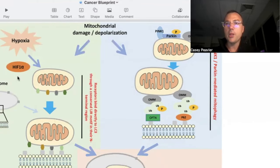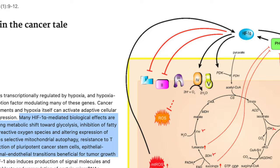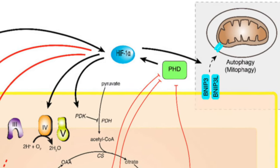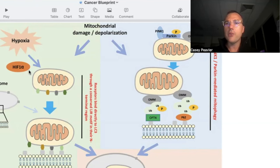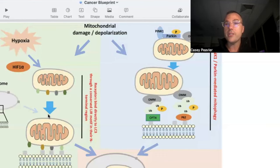If you remember from the hypoxia inducible factor videos, either hypoxia or pseudo-hypoxia can drive Warburg metabolism and is intimately involved in this process. This gives us the first hint that mitophagy is not exactly black and white in cancer — excess HIF1 alpha expression can lead to pathologic destruction of even healthy mitochondria through excess mitophagy. In many cancers, there is a lack of mitochondrial biogenesis combined with excess mitophagy, meaning no new healthy mitochondria are made to replace those destroyed, so cancer cells have to rely on Warburg metabolism.